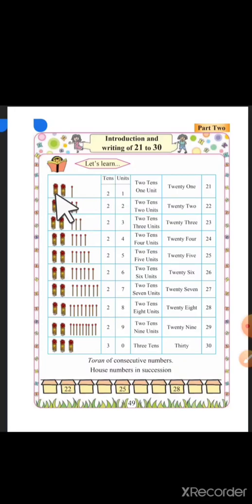Let's learn how to write 21 to 30 numbers. This is the bunch of 20 matchsticks. In one bunch, there are 10 matchsticks. 2 tens is equal to 20 and 1 unit makes 21.